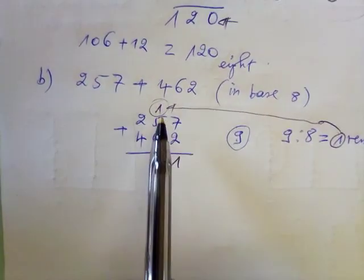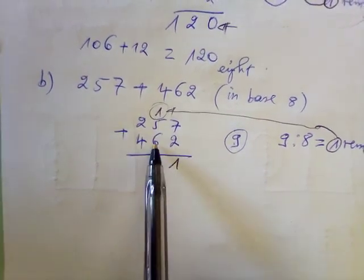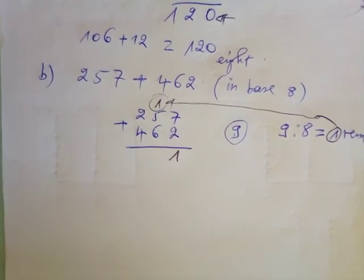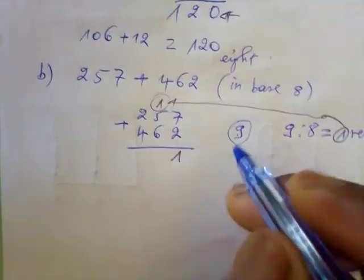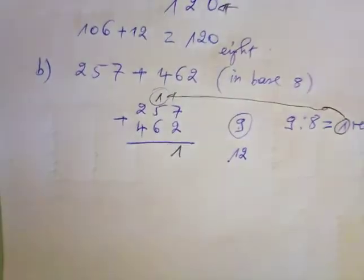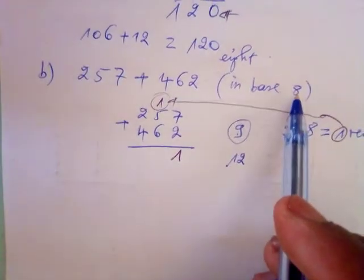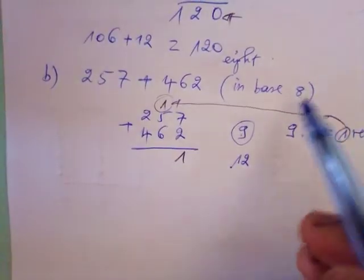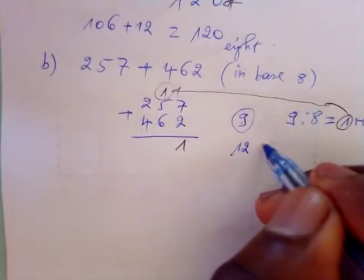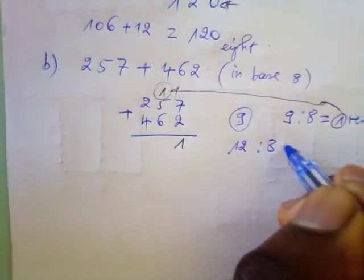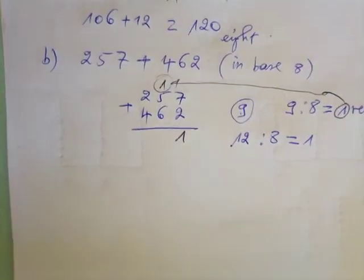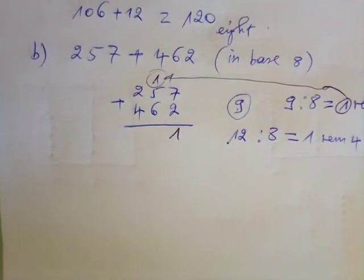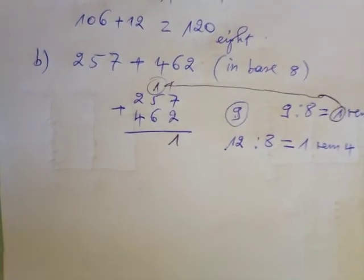Now we add the eights column: one carried plus five plus six equals twelve. This twelve is also greater than our base, so we divide twelve by eight. Twelve divided by eight gives one, with a remainder of four.